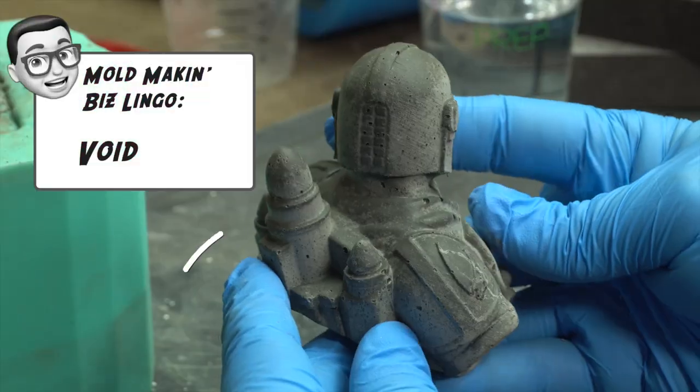The second thing I had to control for were bubbles. If you don't remove bubbles from the concrete, they cause what's referred to in the mold making biz as voids. You want to avoid voids. Fortunately, they're easily avoidable. And this is the way to avoid them. The best way to remove bubbles is to agitate the concrete mixture.